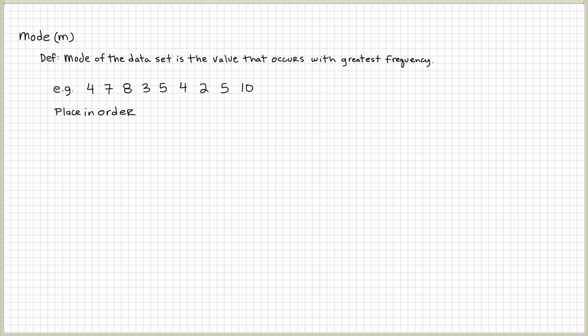Okay, what's the first smallest number? That's right, two, then three, okay. Then there's two fours, two fives, seven, eight, and ten.